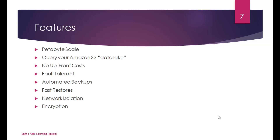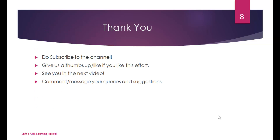To summarize: ElastiCache improves application performance by providing a caching mechanism, while Redshift is a data warehousing solution from AWS that helps you run analytical queries and operations on your data. Thanks for watching — see you in the next one.